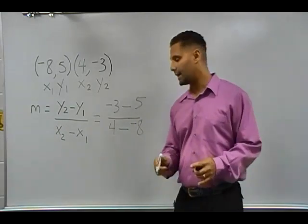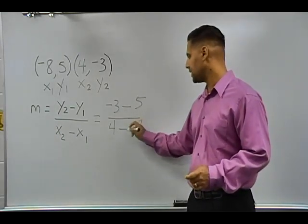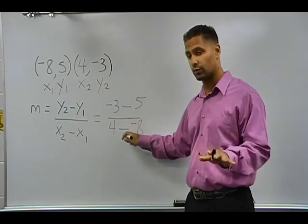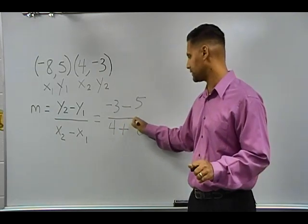Now right away, I note that there are two consecutive negative signs on the bottom, and we know following our integer rules that we must change them both into positive numbers.